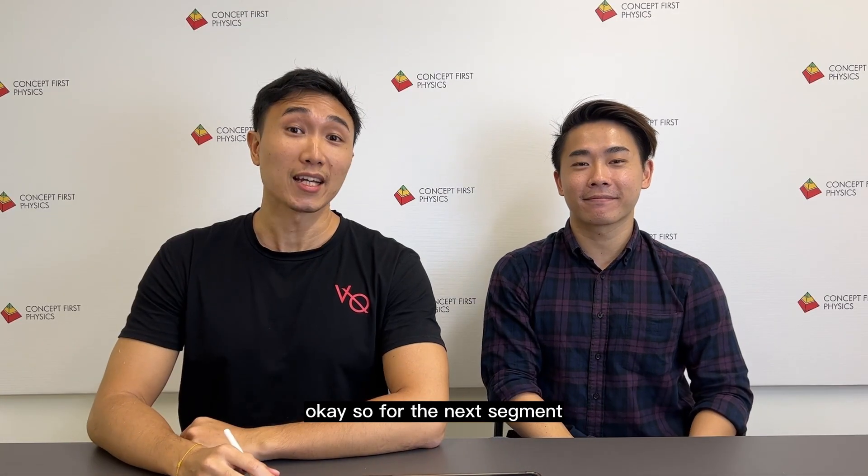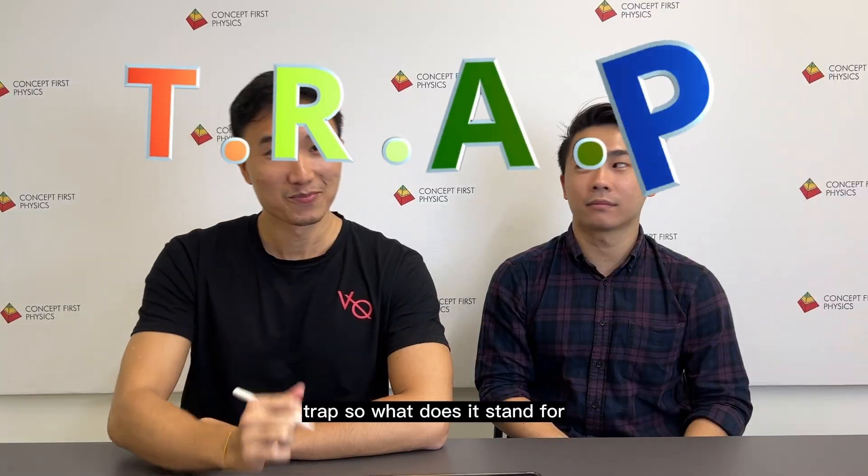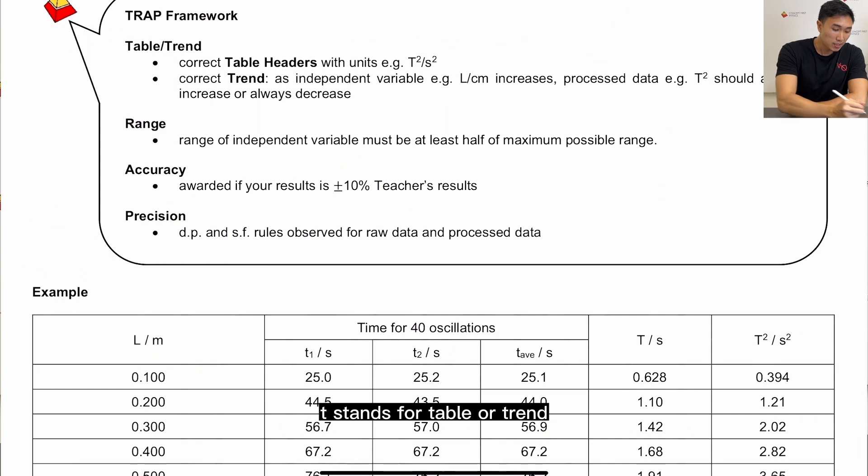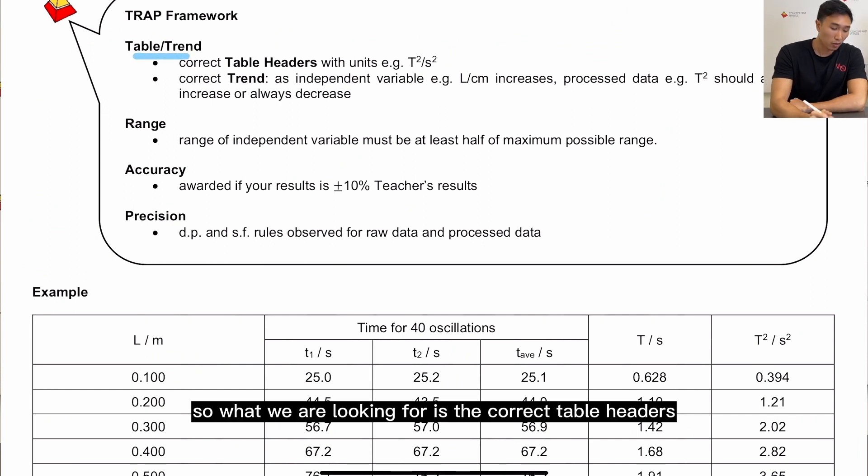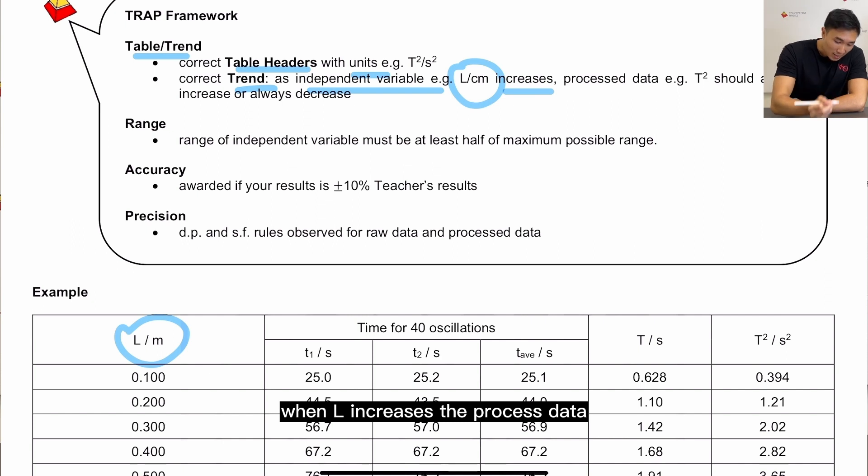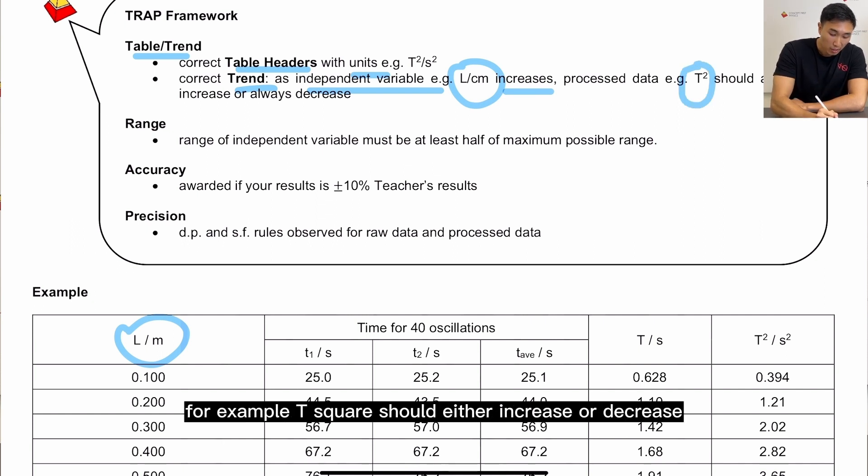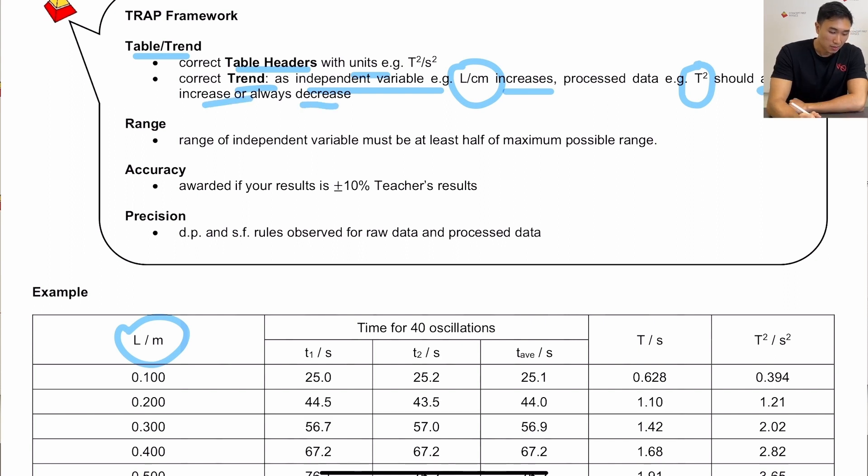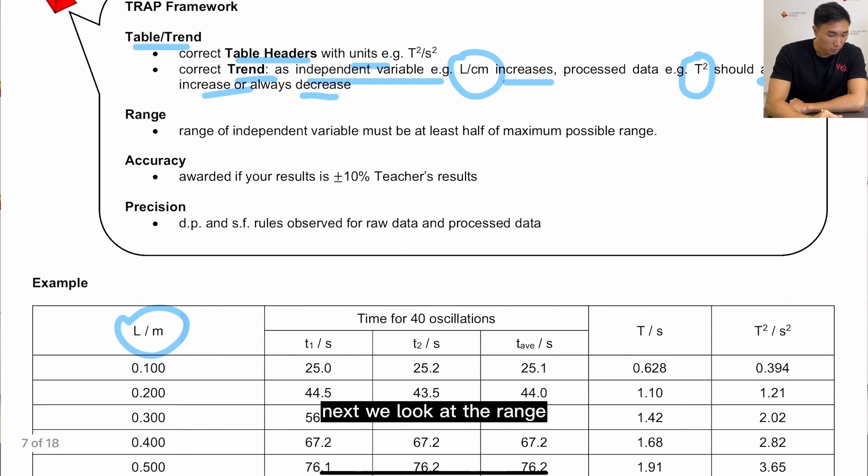Okay, so for the next segment we will touch on the TRAP framework, T-R-A-P. So what does it stand for? T stands for table or trend. So what we are looking for is the correct table headers with the appropriate units. For trend, we are looking for the independent variable, for example L in cm or meters. When L increases, the process data which is the dependent variable, for example T squared, should either increase or decrease. Next, we will look at the range.